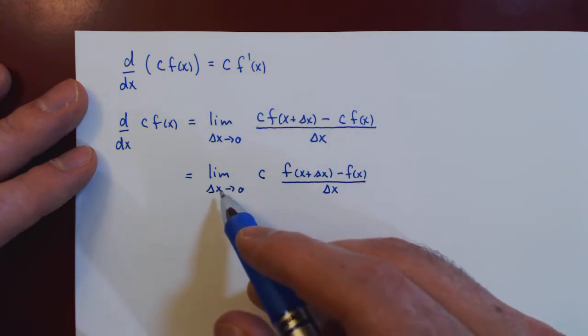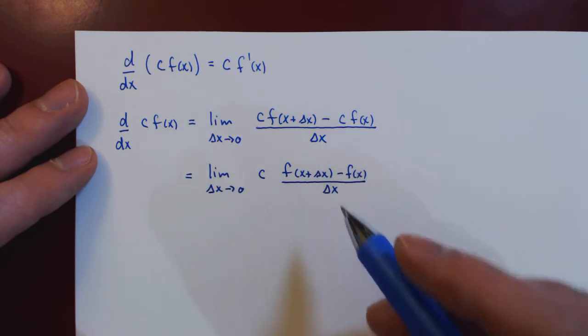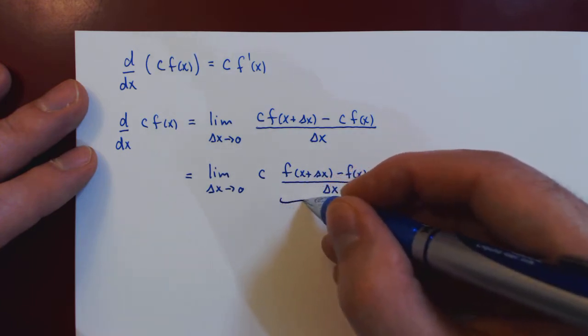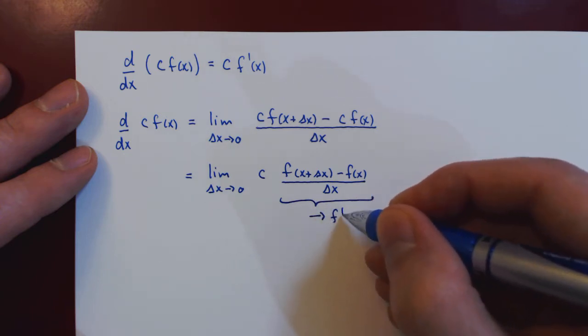And now as delta x approaches zero, we know that f of x plus delta x minus f of x over delta x in the limit approaches the derivative of x.